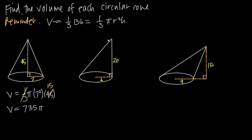For this next example, we have a circular cone where the base is a circle with radius 6. The height is given as 20, and you might say that's not the true height since we were talking about the altitude, not the slant height. But the giveaway is the right angle indication here, which tells us that this is in fact the height of the cone, not just the slant height.